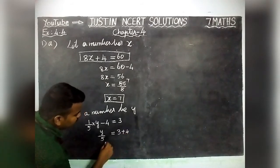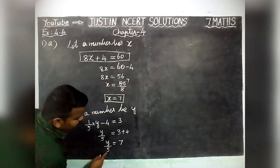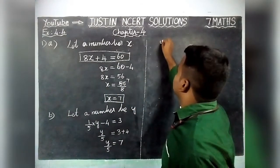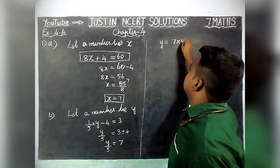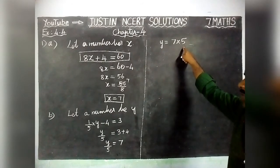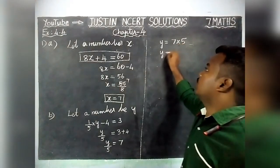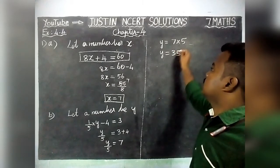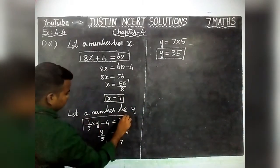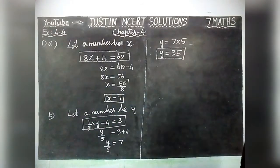So Y/5 = 7. Now taking 5 to the right hand side, since it is division going to the right hand side it becomes multiplication: Y = 7 into 5 = 35. So Y is equal to 35. The equation is Y/5 - 4 = 3.